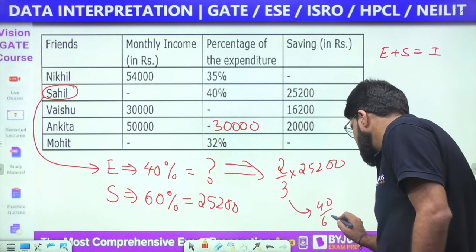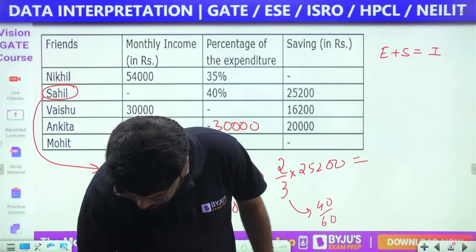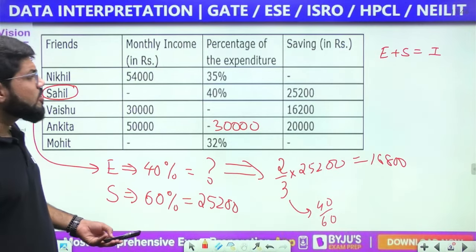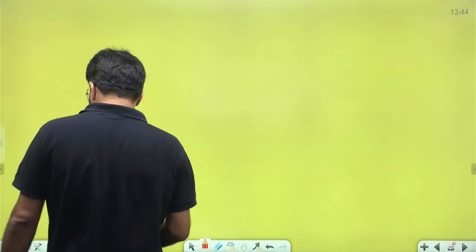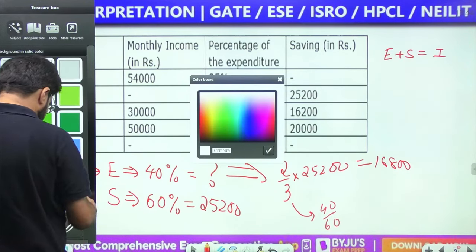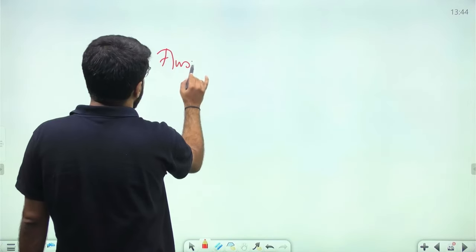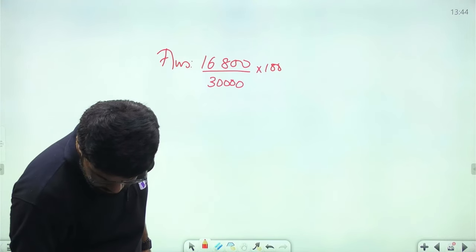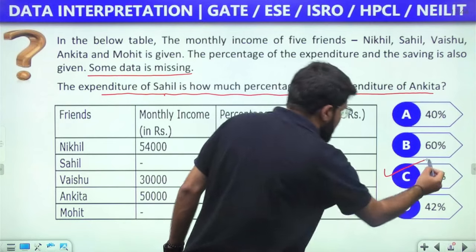The required answer is 16,800 as a percentage of 30,000, which is (16,800/30,000) × 100 = 56%. The answer is option C: 56%.